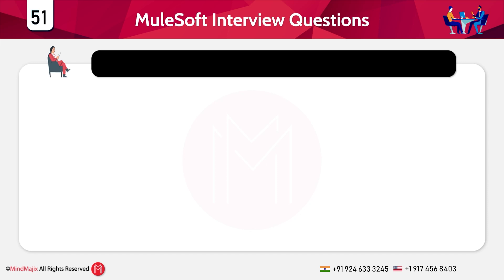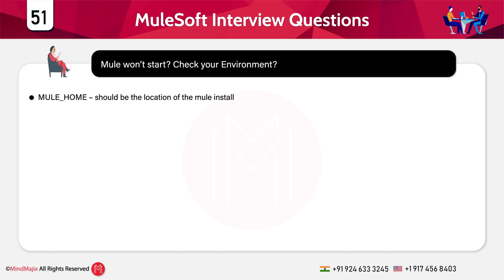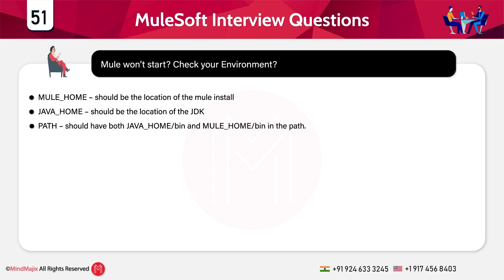What do you do if you get the error 'Mule is not able to start — check your environment'? First, ensure that the MULE_HOME environment variable is set up correctly — MULE_HOME should be the location where Mule is installed. Second, ensure that the JAVA_HOME environment variable is set correctly to the Java installation location. Third, ensure the PATH variable includes both JAVA_HOME/bin and MULE_HOME/bin. Once you verify these three things, you won't encounter the 'Mule is not able to start — check your environment' error.